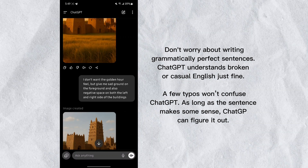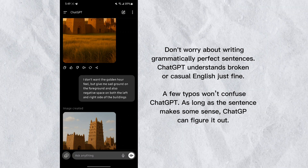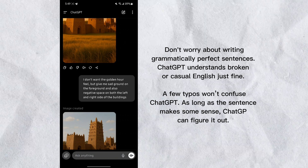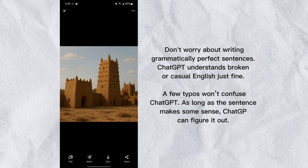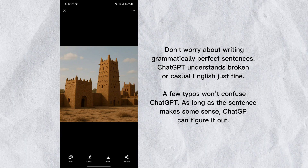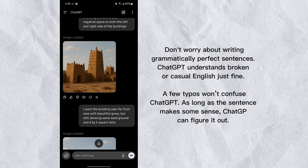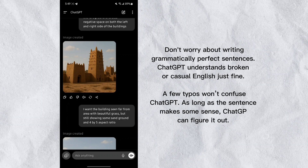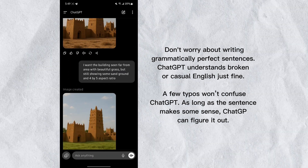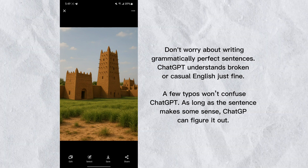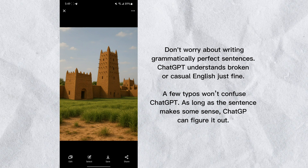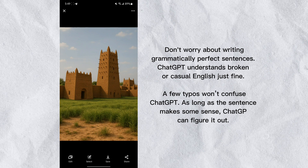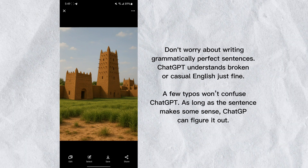I still felt I needed more adjustment — that's how you keep going on ChatGPT until you achieve your desired image. I gave it the next prompt: 'I don't want the golden hour feel, but give me sand ground on the foreground and negative space on both left and right sides of the buildings.' Then I gave the last prompt requesting beautiful grass still showing some sand ground with a four-by-five aspect ratio, and downloaded this final result and sent it to my computer.